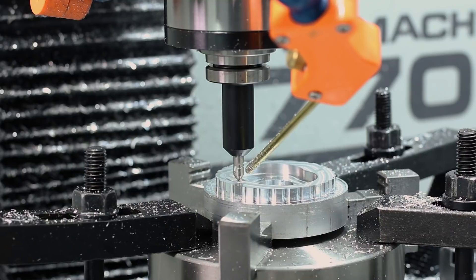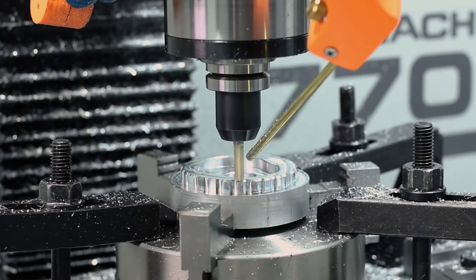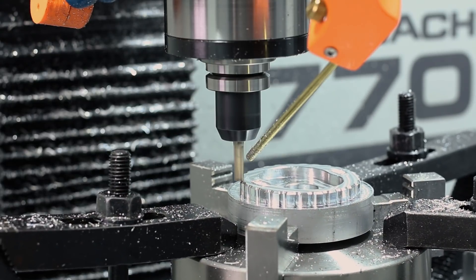Next up is Tormach's diamond tipped engraver, and we're going to engrave the logo, and then come back over it with that same facing operation to get rid of the burr that it raises.